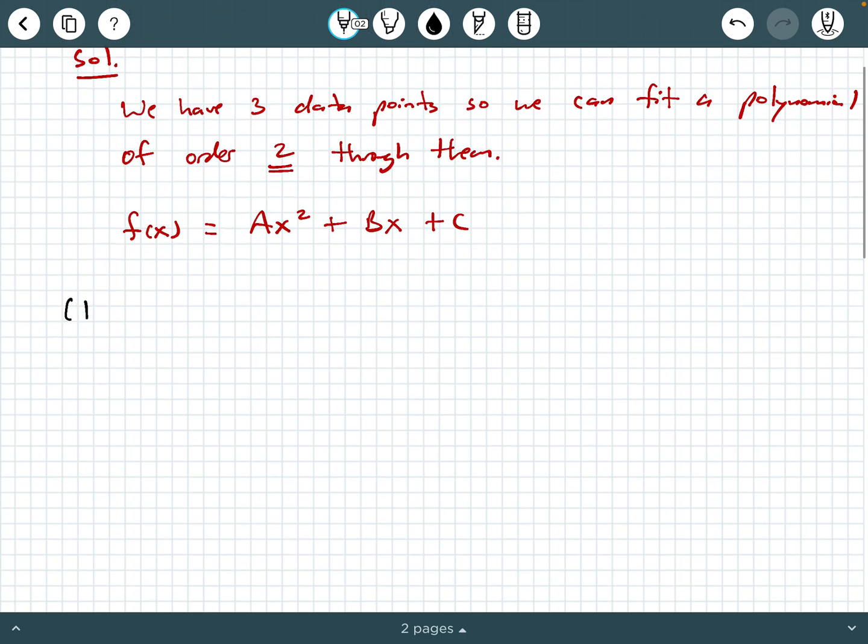So for the point (1,4), what do we have here? Well, notice I put a colon here. We're going to say when f(x) equals 4, we substitute in 1 for the x value. So we say 4 equals A times 1 squared plus B times 1 plus C.